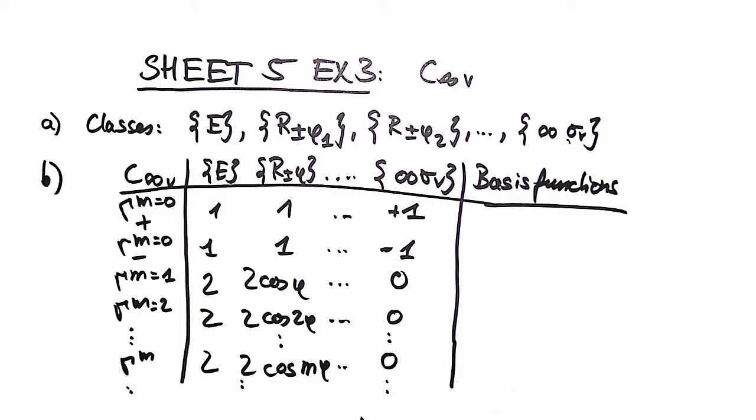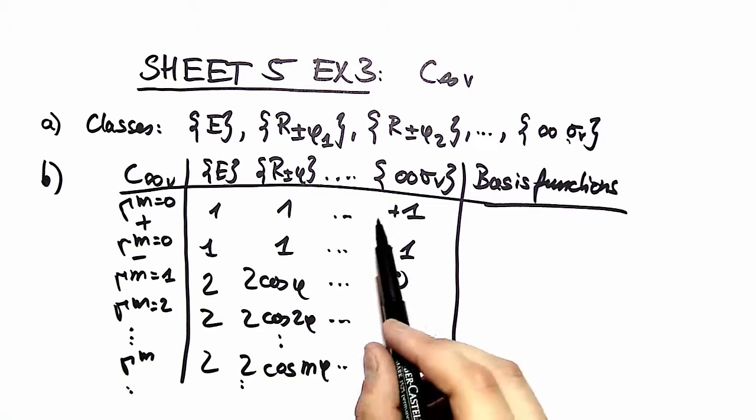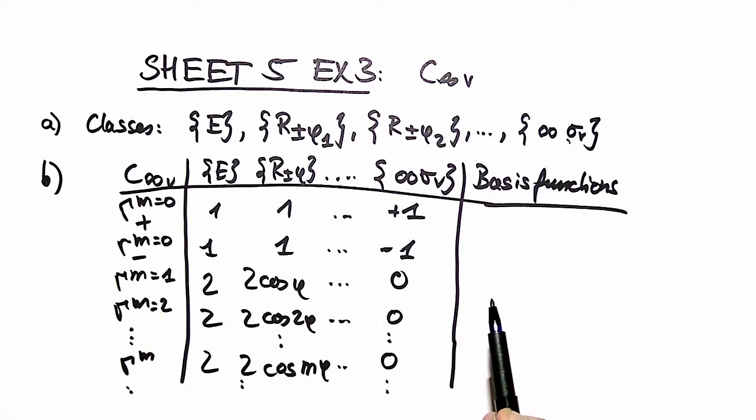Now here comes the tricky part. We want to distribute some basis functions. We choose the d1 basis functions of exercise number two for that, and we distribute them onto these irreducible representations.